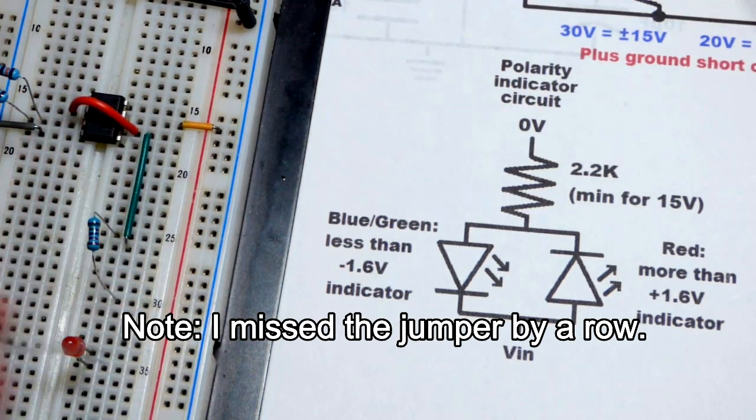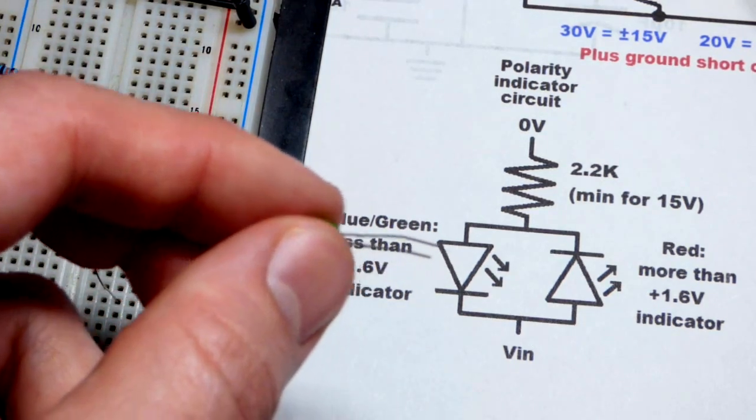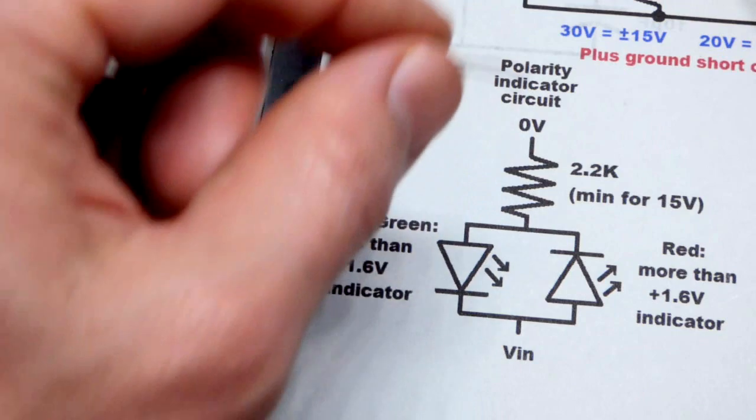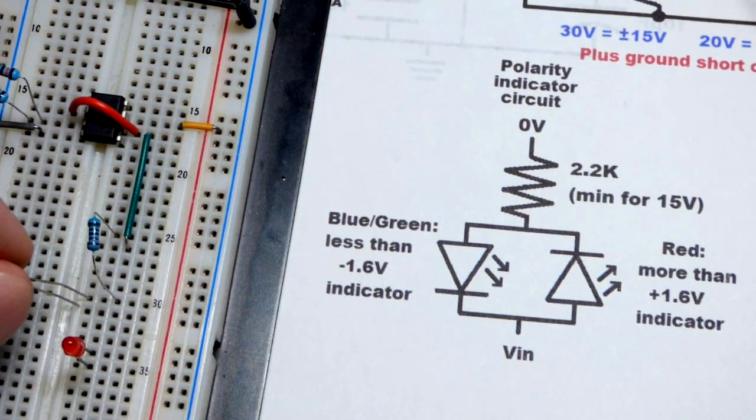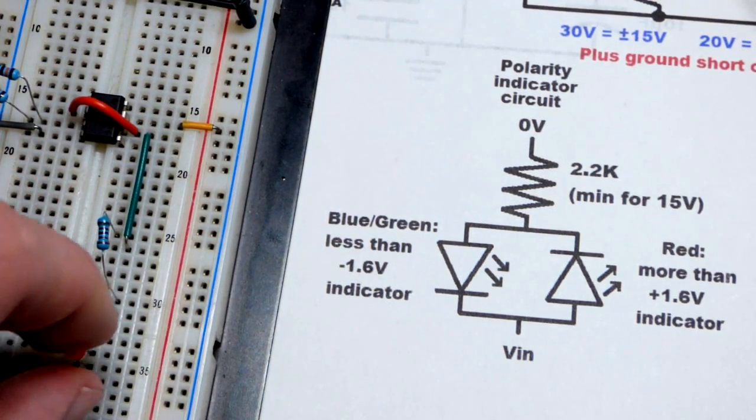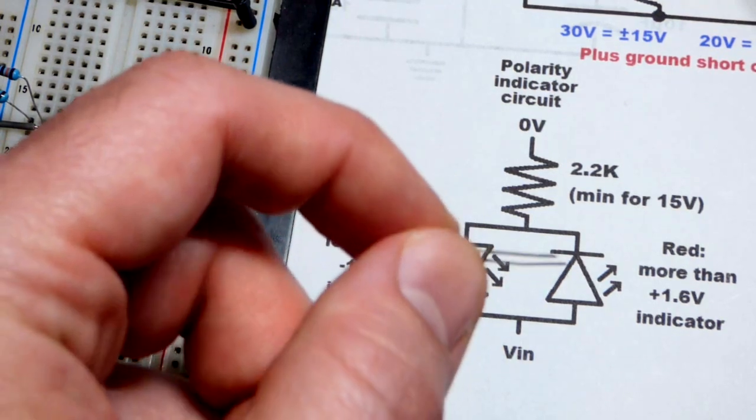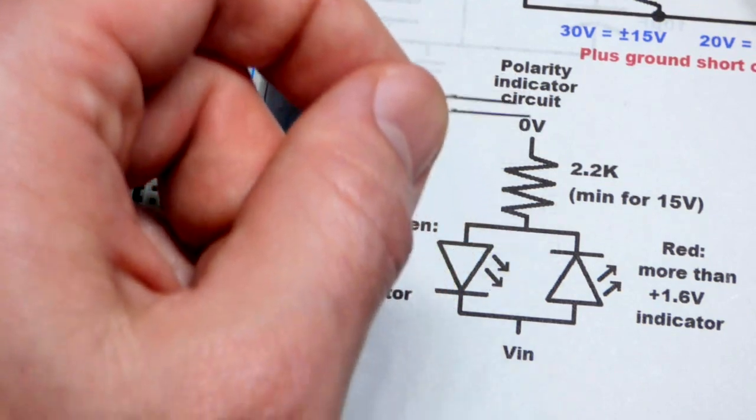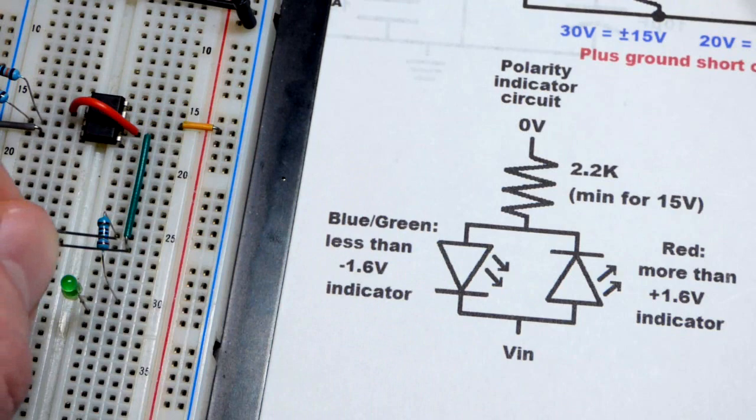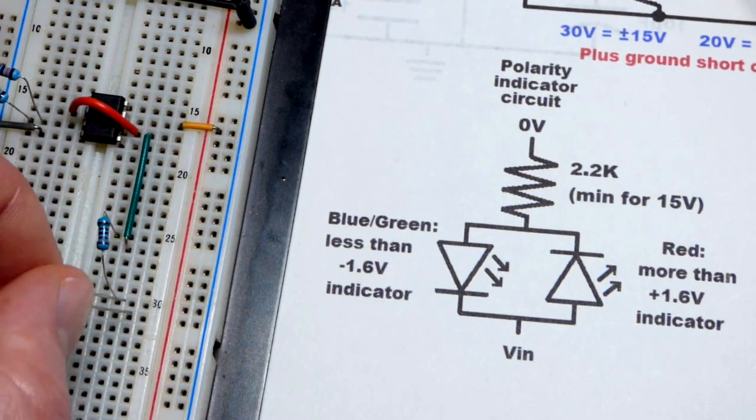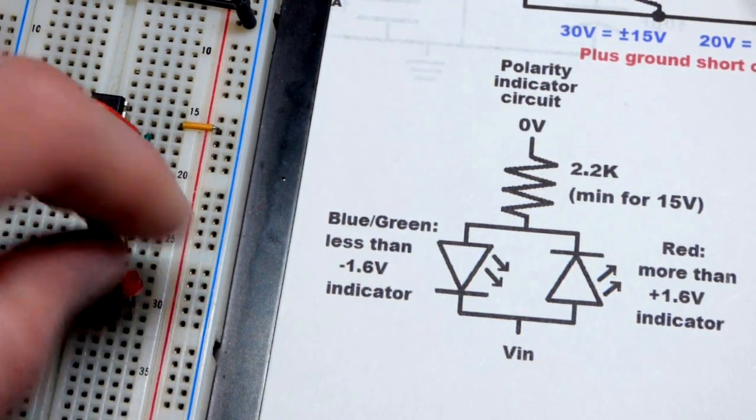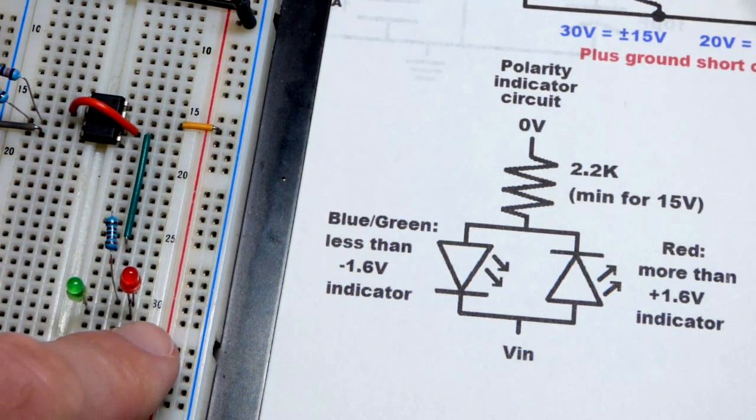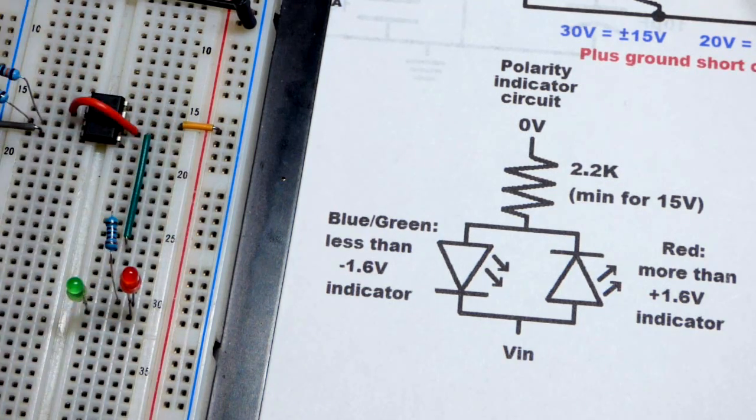We're going to take the resistor here, set it to ground. Then we're going to put the green LED where the cathode, the short lead, is down one row. The long lead, the anode, is going to go to the resistor that goes to ground. We're going to put the red LED the opposite direction. The cathode is going to the virtual ground there, the green jumper, or actually the resistor before it goes to the green jumper. Long lead, the anode, is going to go down one row. So I have anode to cathode, and then anode to cathode over there.